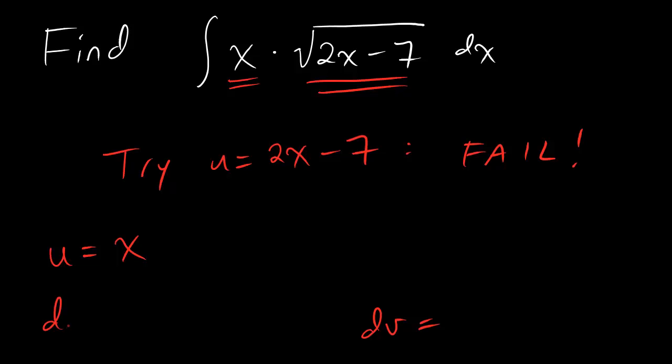If we pick u equals x, then we've got to calculate our du. And dudes, our du is just 1 times dx. So let's just write du equals dx. Now, dv, therefore, it has to be what's left over, which is square root of 2x minus 7 dx. And that means that we have to take the antiderivative of that puppy in order to figure out what v is.